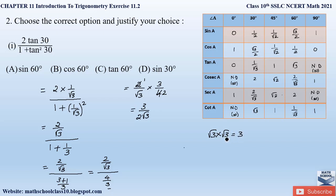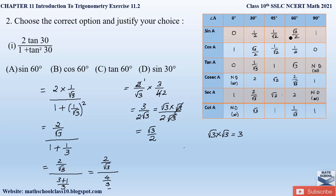Now, 3 can be written as root 3 times root 3. Rewriting: (root 3 × root 3) divided by 2 root 3. The root 3 in the numerator and denominator cancel, leaving root 3 by 2. Checking the options: sin 60 is root 3 by 2 — that matches. Cos 60 is not root 3 by 2, tan 60 is not root 3 by 2, and sin 30 is not root 3 by 2. So the correct answer is sin 60, which equals root 3 by 2.